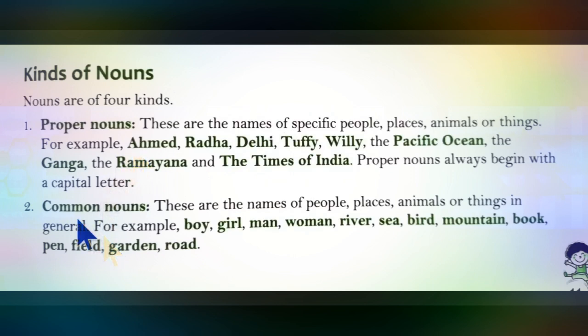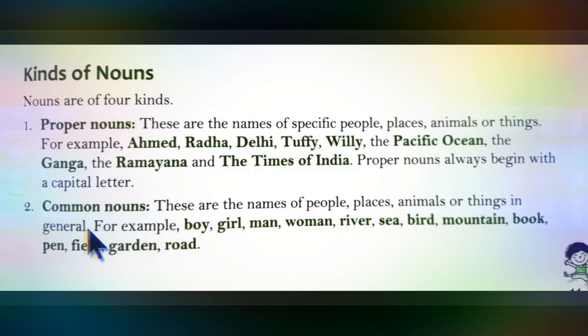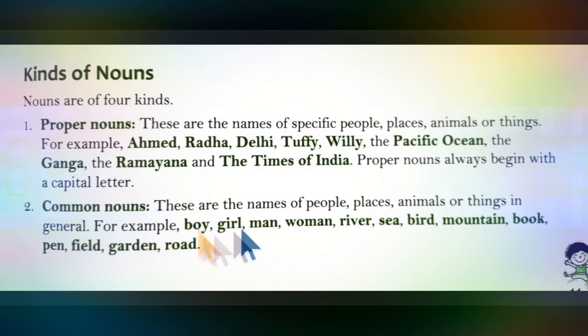The second type of noun is common noun. These are the names of people, places, animals or things in general. It means we are not talking about any specific person, place, animal or thing — we are talking about them in a general sense. For example, boy or girl: we don't know which boy or which girl we are talking about. These types of nouns are known as common nouns.